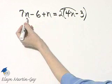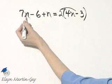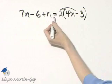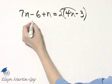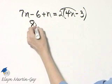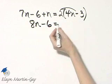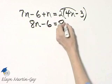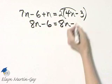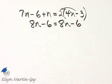The left side, oh, notice on the left side I have a few like terms. I have 7n plus n. Let's go ahead and write that as 8n, and then minus 6 is equal to 2 times 4n, that's 8n, minus 2 times 3 is 6.